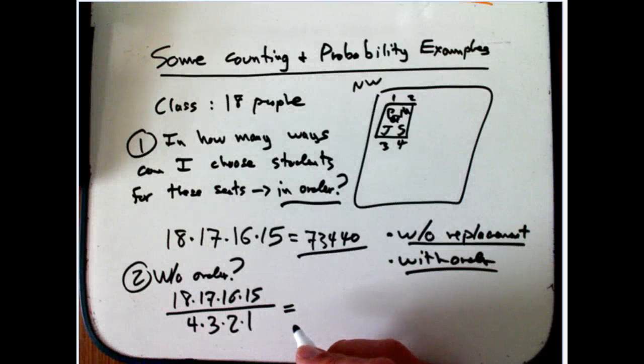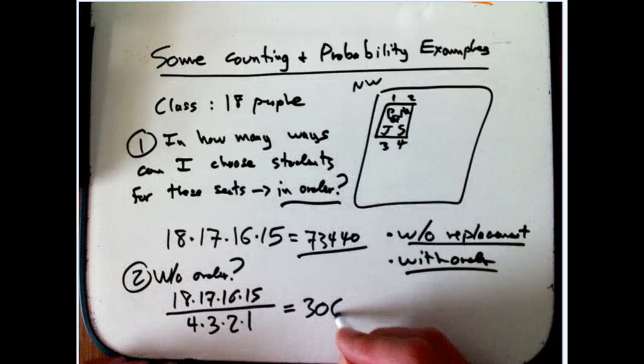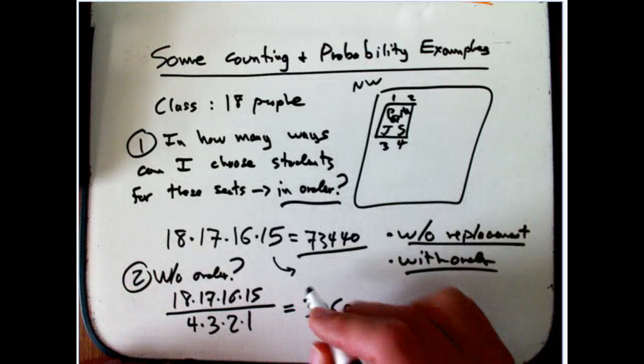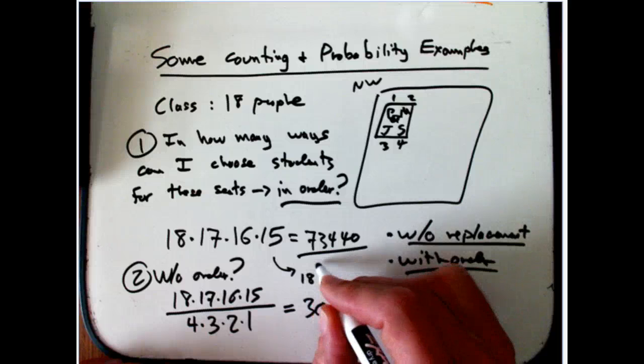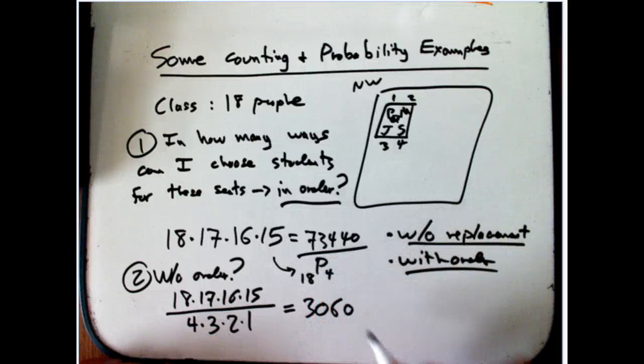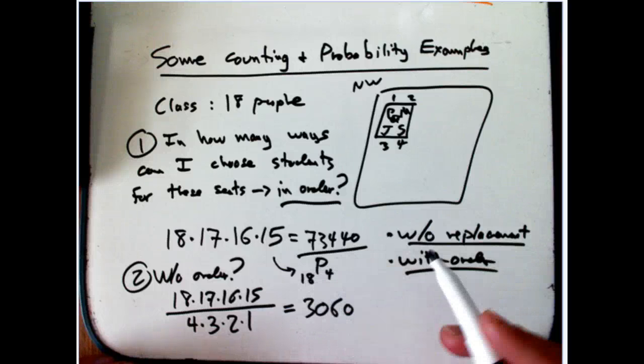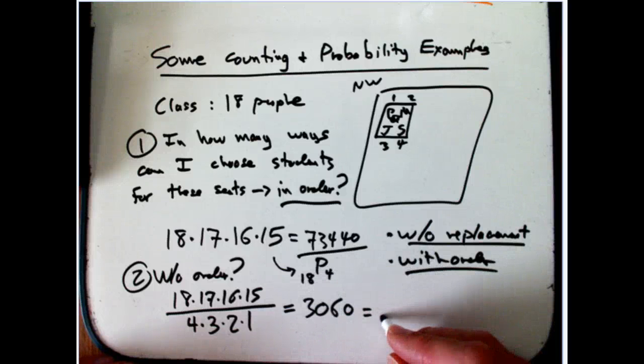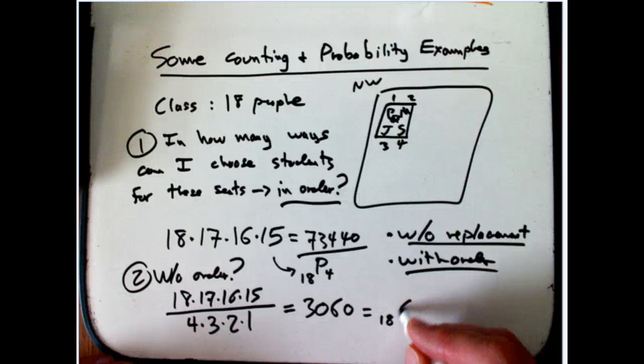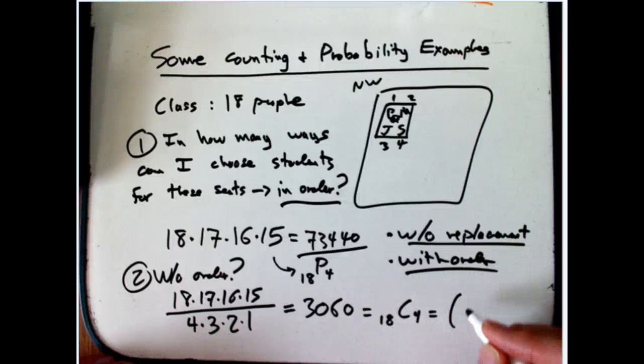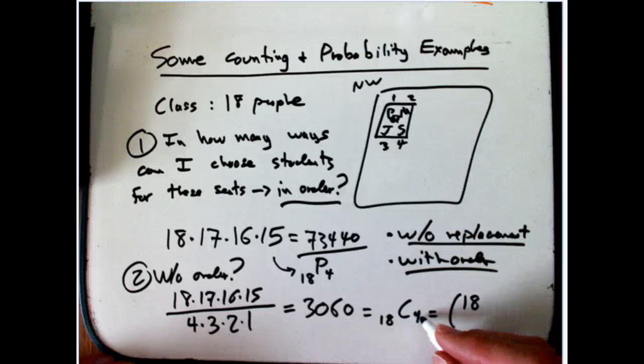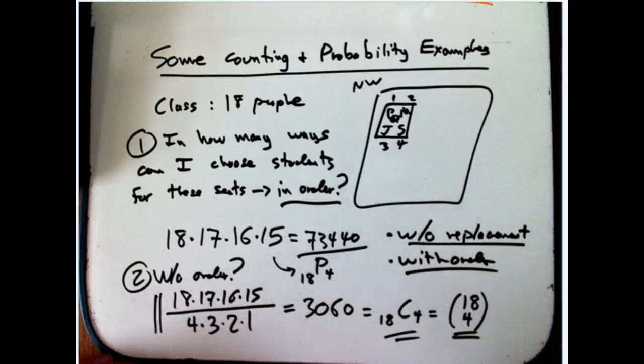And that is 3060. And what's the notations for these guys? These have nice notations. This is 18 pick 4, or permutations of 4 objects chosen out of 18. And this is denoted 18 choose 4, also using what's called the binomial notation, which will make that connection soon.